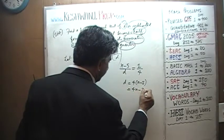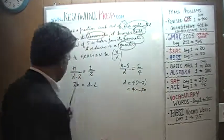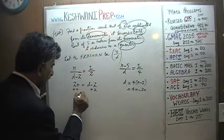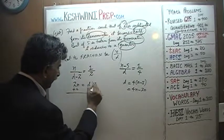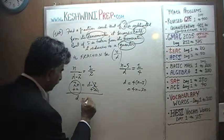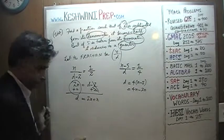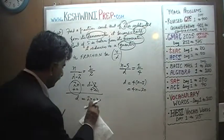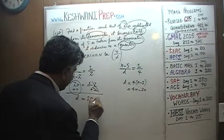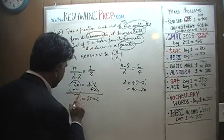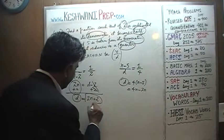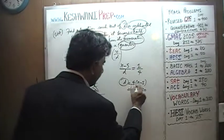Opening the parenthesis, we get 4n minus 20. Here's our d. Bringing the 2 to this side — if we add 2 to both sides, we end up with d equals 2n plus 2. And here we also have a d, which means these two quantities are to be equal to each other.